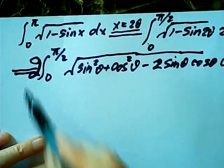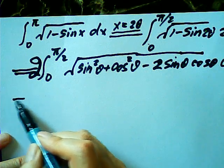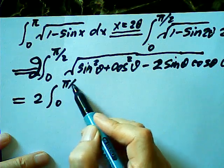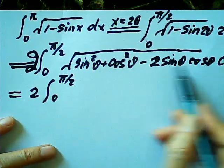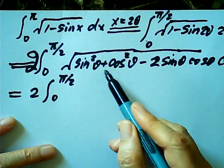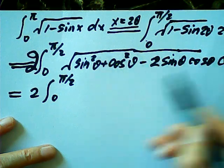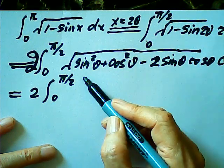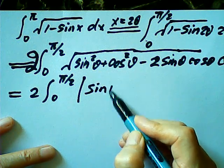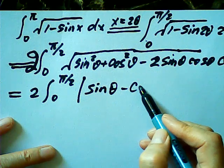I move the two out in front. This is a perfect square — sine minus cosine, squared. So after taking the square root, it becomes the absolute value of sine theta minus cosine theta.